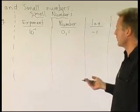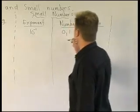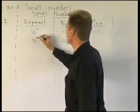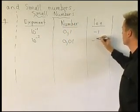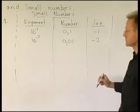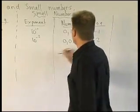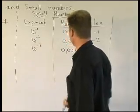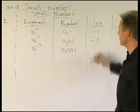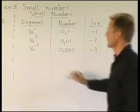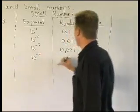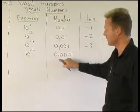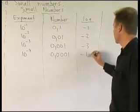This is not a difficult section at all. If it's 0.01, it's gone two places — 10 to the minus 2 — so you write the log as negative 2. If it's 0.001, you write it as 10 to the minus 3, and the log of that would be minus 3. And 10 to the minus 4 — the number is 0.0001, four decimal places — and the log of that would be minus 4.